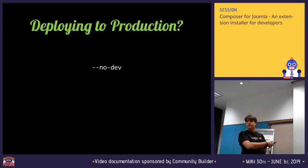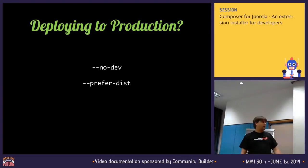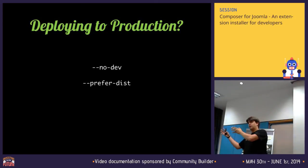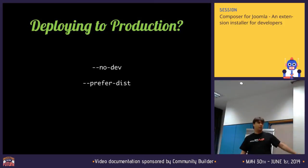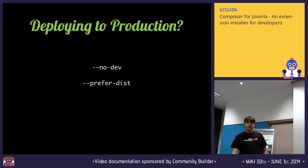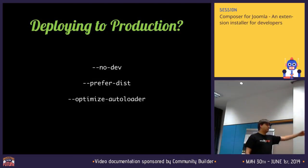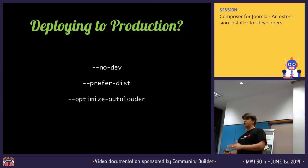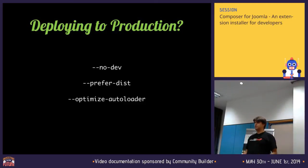What you want to do is run with --no-dev so you don't get any dev packages. You want to add --prefer-dist so it downloads tag releases and not checkout repositories — when it does preferred-source it will actually have git checkouts of your code in the vendors folder. And you want to run --optimize-autoloader, which converts all of the autoloading into a class map — a lot faster than trying to find files. It basically gives you a one-to-one mapping.